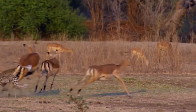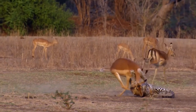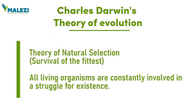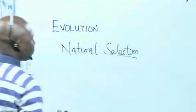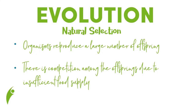The second theory is Charles Darwin's theory of evolution, which we call the theory of natural selection — also known as survival of the fittest. This theory is built around certain facts. Fact one: organisms reproduce large numbers of offspring. Fact two: there is competition among the offspring due to insufficient resources. Of course, reproduction is one of the features of living things.